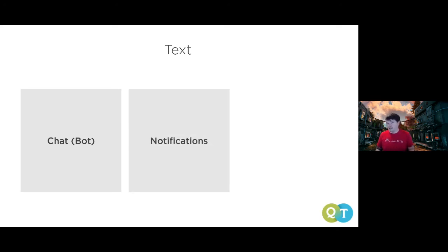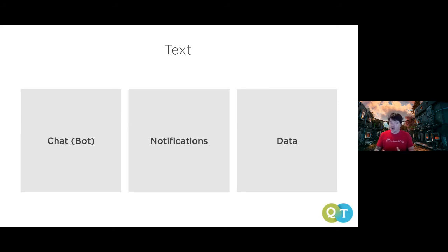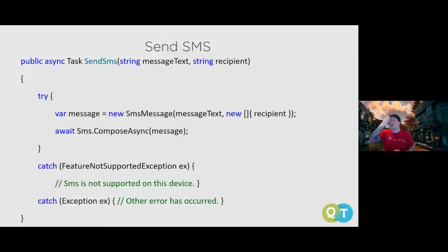SMS is also used for notifications — like pharmacy prescription alerts — and two-factor authentication codes. In Xamarin, sending an SMS is simple: create an SmsMessage, set the recipients, call ComposeAsync(), and it opens the native SMS app with the message populated.